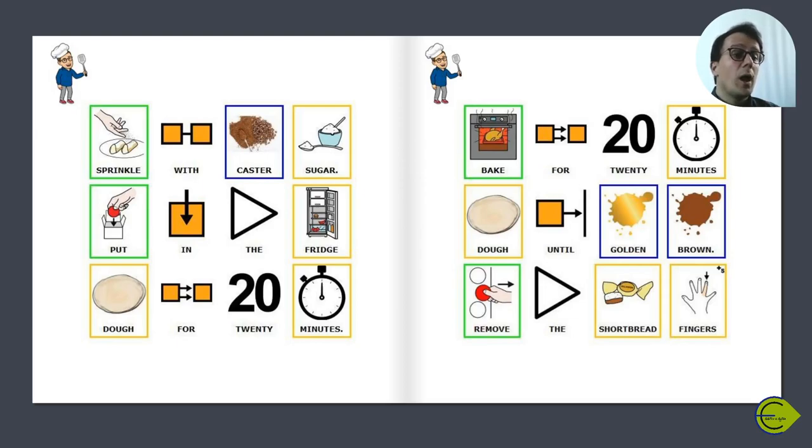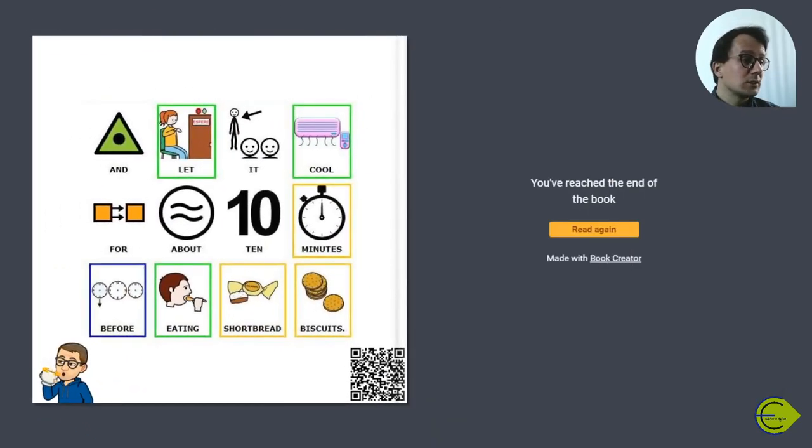Bake until the dough is golden brown. Remove the shortbread fingers and let them cool for about 10 minutes before eating the biscuits.